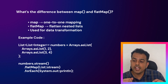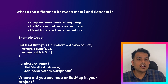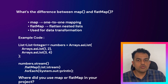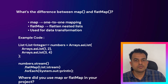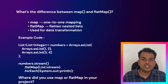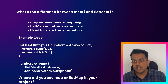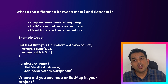They might also ask where you used flatMap() or map() in your project. You can say you used map() for transforming DTOs to entities, and flatMap() for flattening nested responses from APIs. If you haven't used these, you can clearly say that.